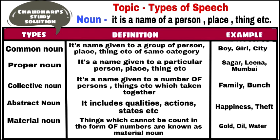According to the definition, a noun is the name of a person, place, thing, etc. Meaning, it is a thing that is written as the name of a person, place, thing, etc. So, that is a noun.